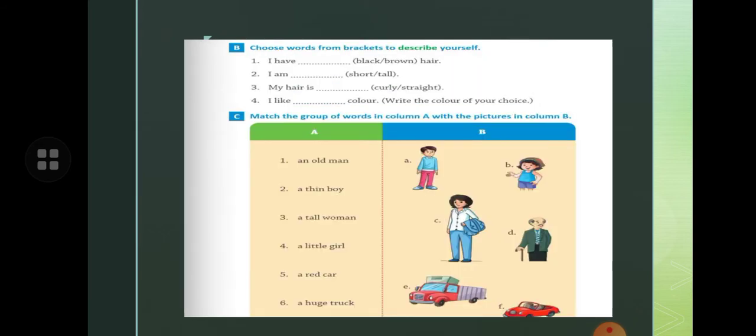Next exercise is choose words from the bracket to describe yourself. You have to describe yourself here. I have a dash here. Black or brown. Which type of hair do you have? You will write here. I am short or tall. What type of height do you have? My hair is curly or straight. I like dash color. Which color do you like? You have to write here.